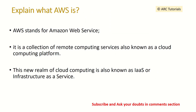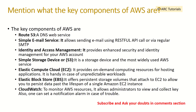The first question that is obviously asked is: what is AWS? AWS stands for Amazon Web Services. It's a collection of remote computing services, also known as a cloud computing platform. This realm of cloud computing is also known as IaaS — infrastructure as a service — platform as a service, and many other things like email. It's a collection of these services that makes AWS most powerful.